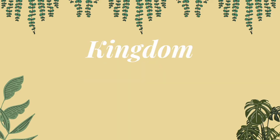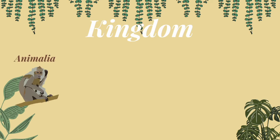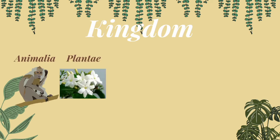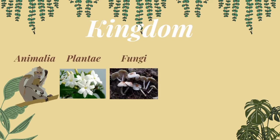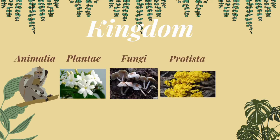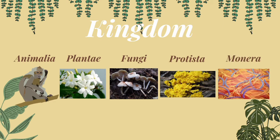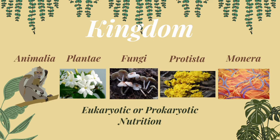Basically, we have five kingdoms: the kingdom Animalia, kingdom Plantae, kingdom Fungi, kingdom Protista, and kingdom Monera. To be able to classify which kingdom the organisms belong to, we should know whether the organisms are eukaryotic or prokaryotic, and how they get their nutrition and how they reproduce.